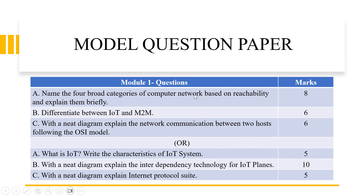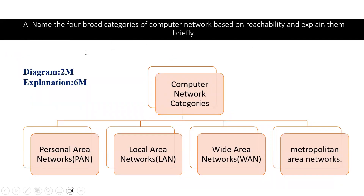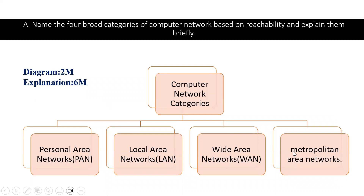Now moving into the scenarios of how the marks are equally divided. For the question 'name the four broad categories of computer network based on reachability and explain them briefly,' you can first draw a diagram, which will be split as two marks. Once you draw this diagram, the evaluators will get to know that you are clear with the answer and are going to explain each of LAN, PAN, WAN and MAN in a detailed way. Then six marks for the explanation of each — PAN, LAN, WAN, MAN — making the total weightage eight marks.